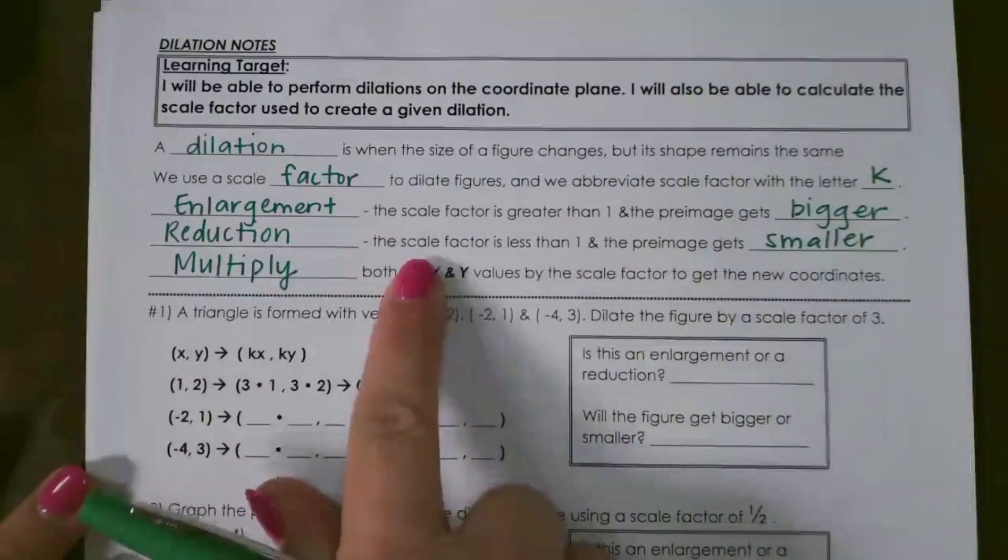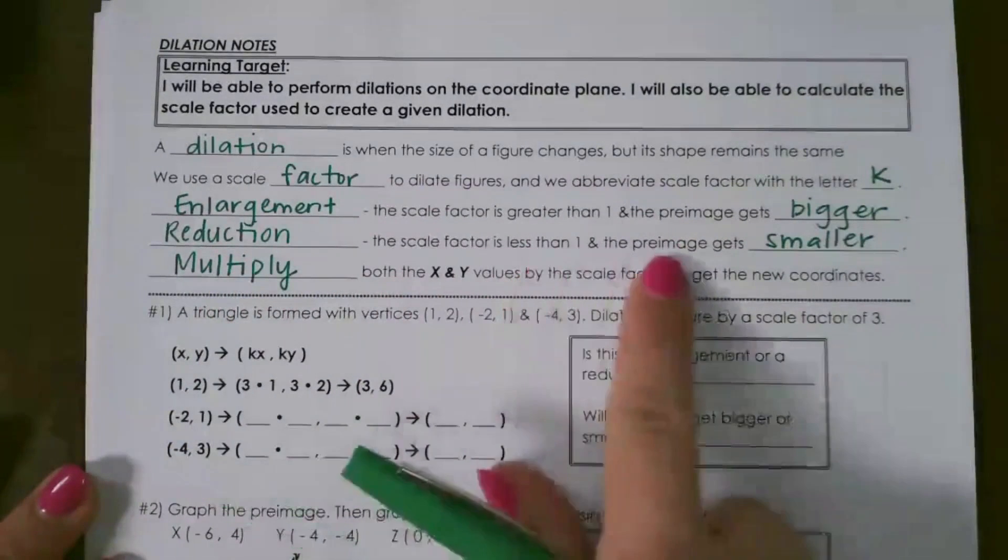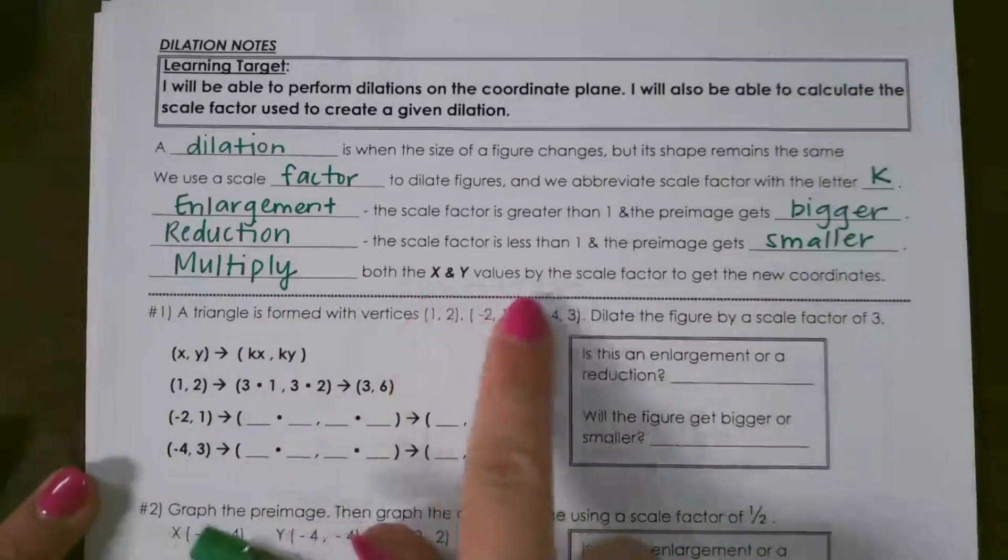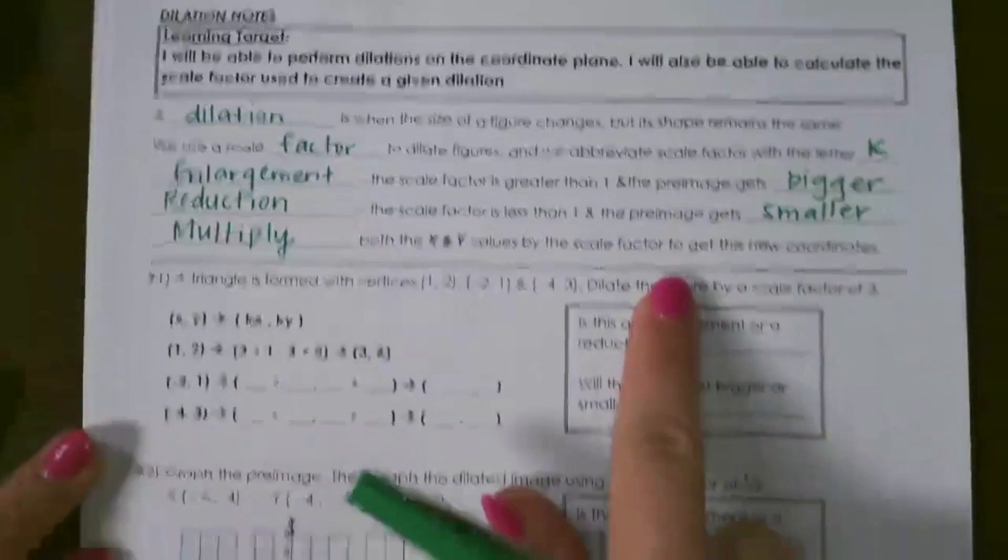Reduction is when the scale factor is less than 1, and the pre-image gets smaller. You have to multiply both the x and y values by the scale factor to get the new coordinates.